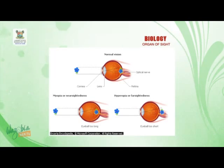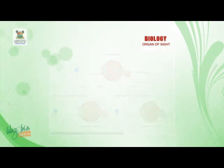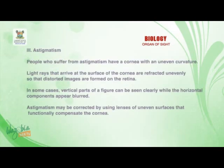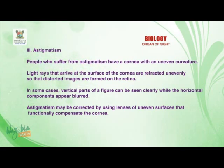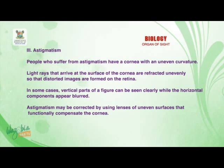Long-sightedness can be corrected by using spectacles with suitable convex lenses. The next defect is astigmatism. People who suffer from astigmatism have a cornea with an uneven curvature. Light rays that arrive at the surface of the cornea are refracted unevenly so that distorted images are formed on the retina.